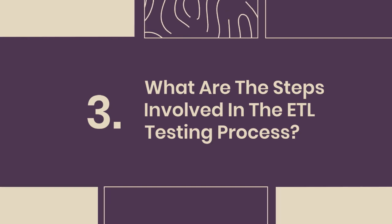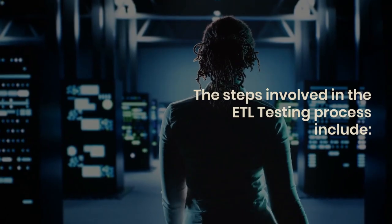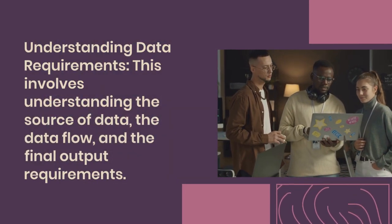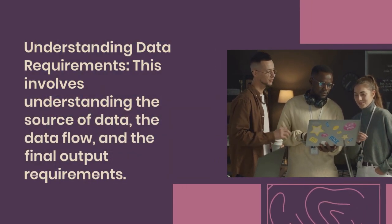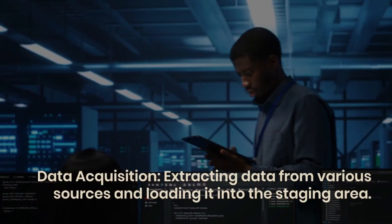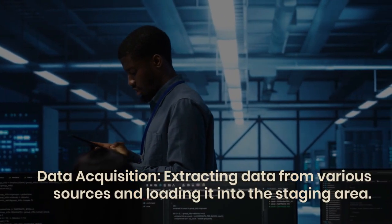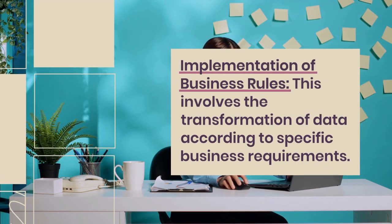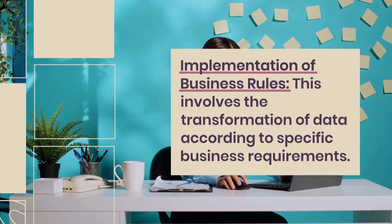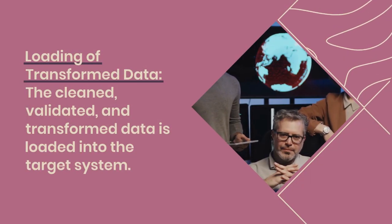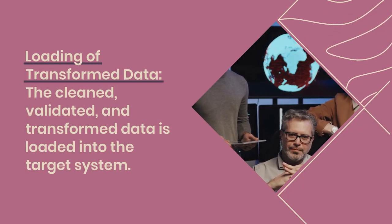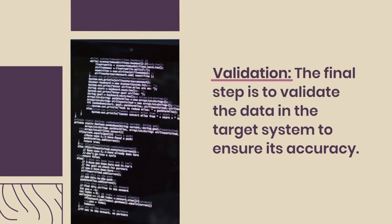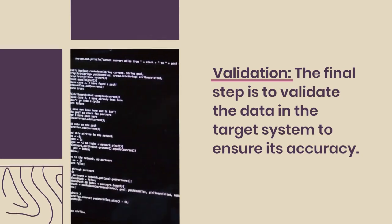Question 3: What are the steps involved in the ETL testing process? The steps include: understanding data requirements — the source of data, data flow, and final output requirements; data acquisition — extracting data from various sources and loading it into the staging area; implementation of business rules — transforming data according to specific business requirements; loading of transformed data into the target system; and validation — verifying data accuracy in the target system.